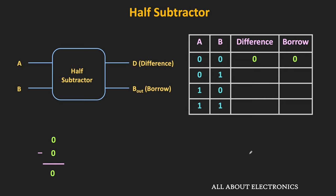Similarly, in the next case, when A is 0 and B is 1, then 0 minus 1 is equal to 1, while the borrow will be equal to 1. Likewise, in the third case, 1 minus 0 is equal to 1 — that means the difference is equal to 1 while the borrow is equal to 0. And similarly in the fourth case, 1 minus 1 is equal to 0 — that means both difference and the borrow outputs are 0.